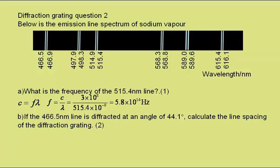Part B: If the 466.5 nanometre line is diffracted at an angle of 44.1 degrees, calculate the line spacing of the diffraction grating for two marks. Well again,